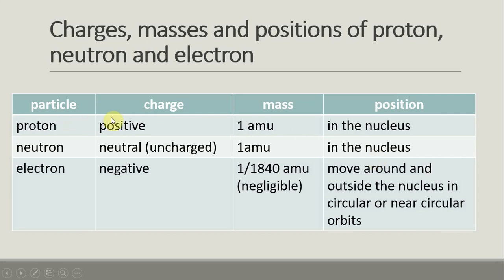The proton is positively charged, mass 1 AMU, positioned in the nucleus. The neutron is neutral and uncharged, mass 1 AMU, positioned in the nucleus. The electron is negatively charged, mass approximately 1/1836 AMU, positioned outside the nucleus.